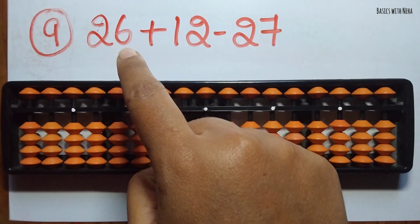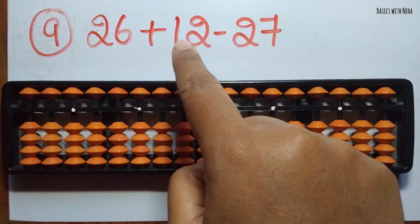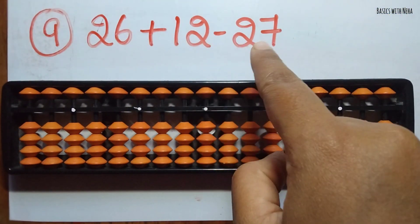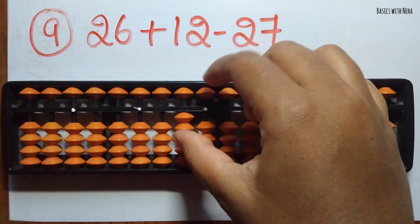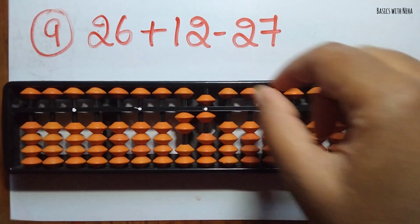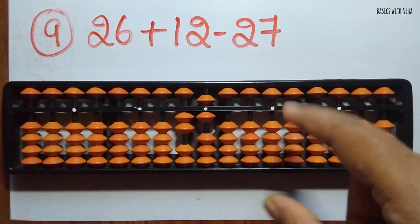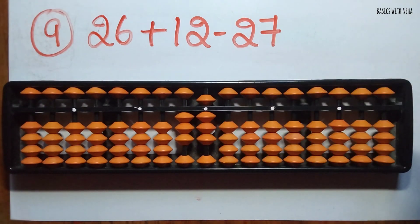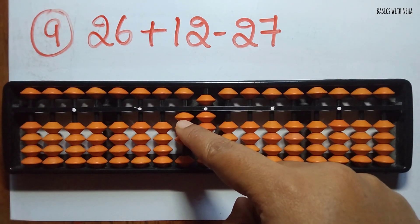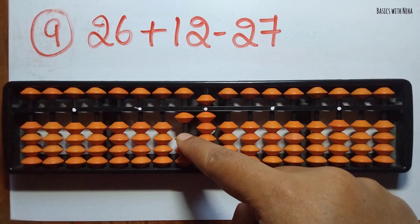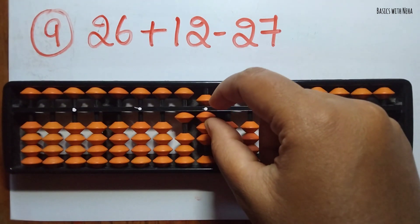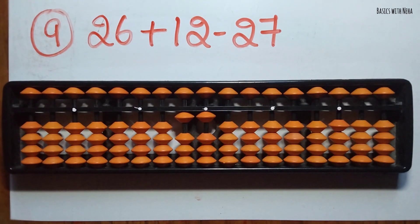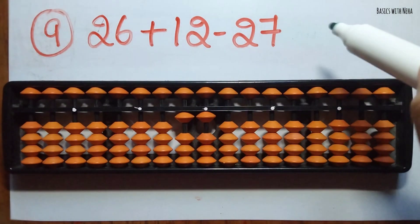The ninth sum: 26 plus 12 minus 27. First take 26, now you should add 12 — add 1 in the 10's rod and 2 in the 1's rod. Then minus 27 — you can minus 2 in the 10's rod directly and 7 in the 1's rod directly. The answer is 11.